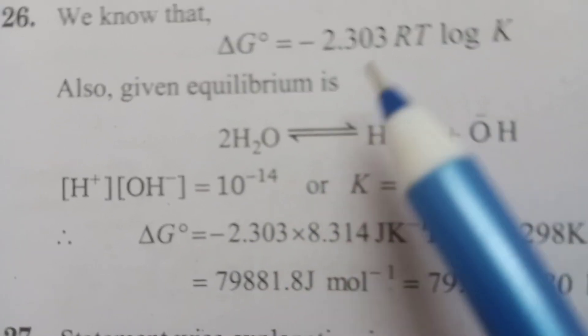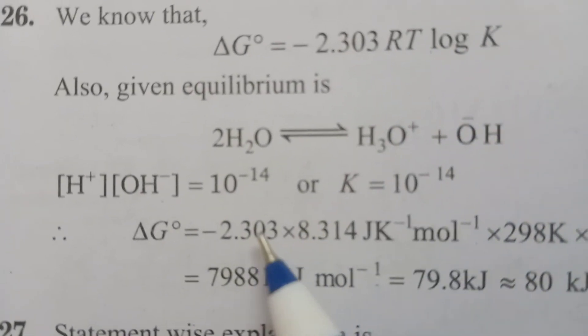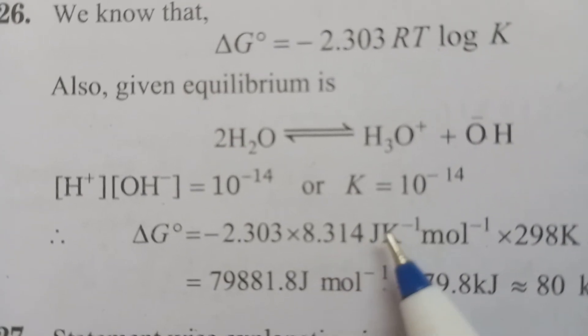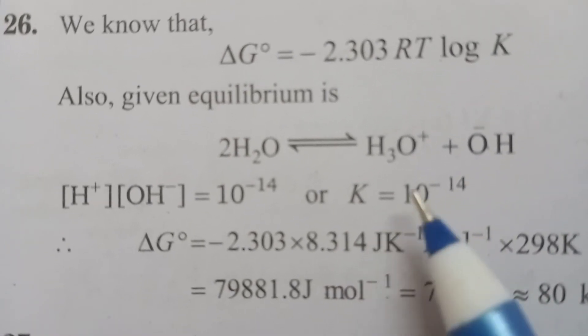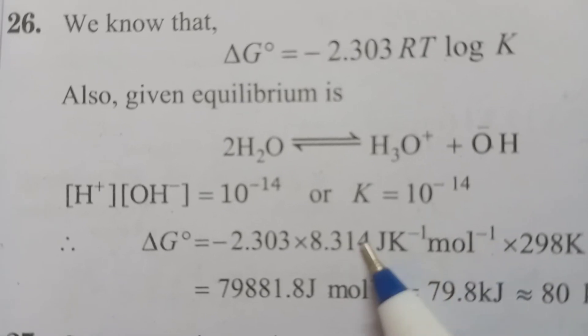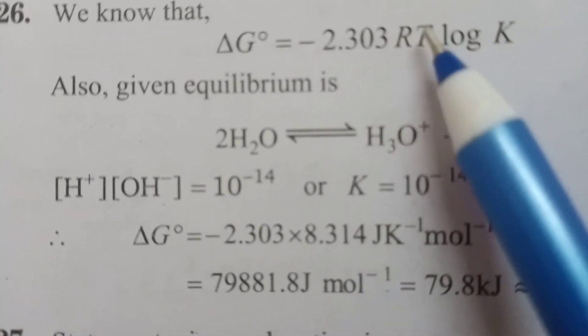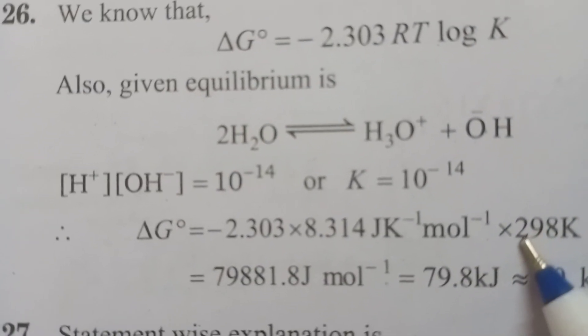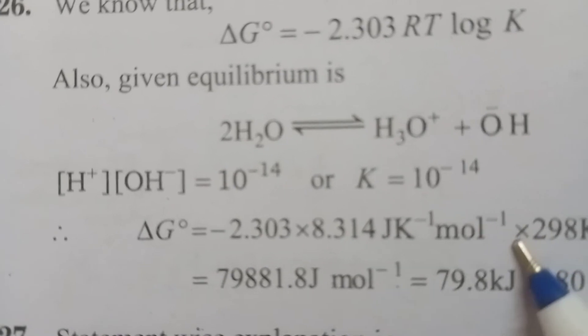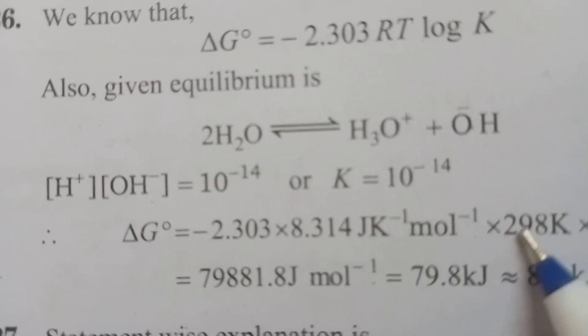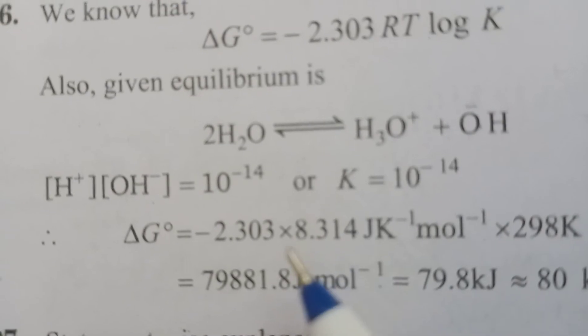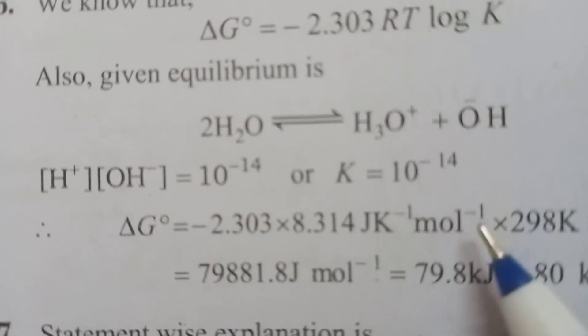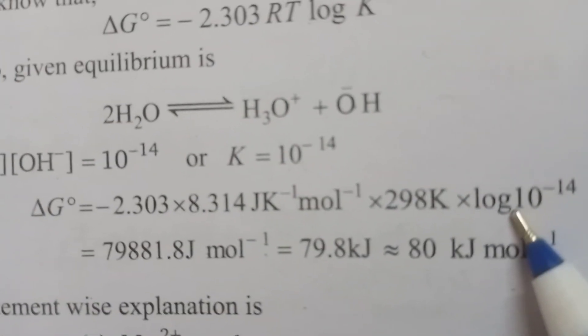ΔG° equals—what is the formula? -2.303 × R (you know the R value: 8.314 J K⁻¹ mol⁻¹, the universal gas constant) × T (what is the temperature they have given? 298K, they already mentioned 298K) × log K.